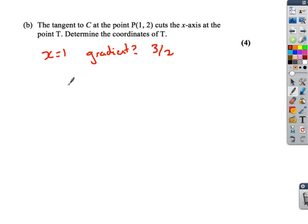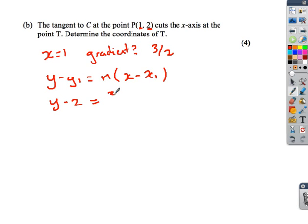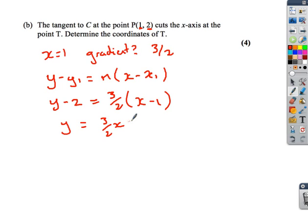We now use the formula y minus y1 equals m times x minus x1. In this case, the tangent at the point (1, 2): the x-coordinate is 1, the y-coordinate is 2. So y minus 2 equals 3 over 2 times x minus 1. If we simplify that, we end up with y equals 3 over 2 x plus 1 half.